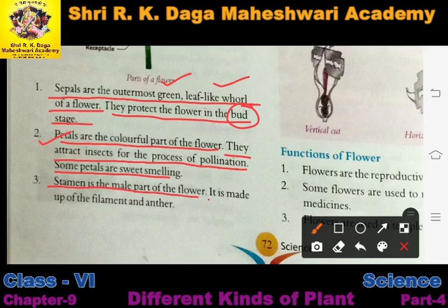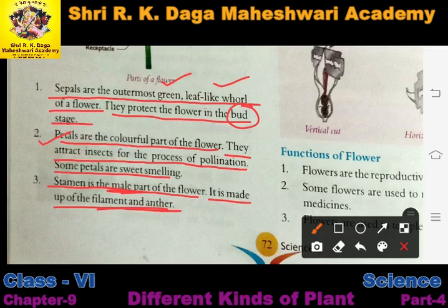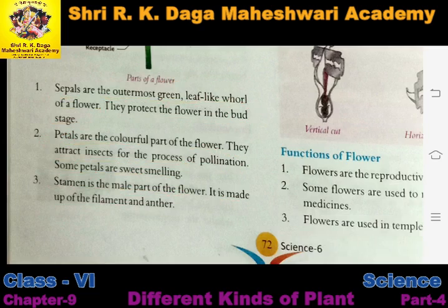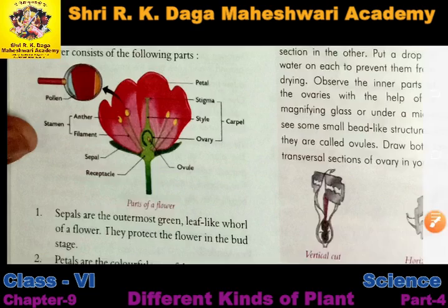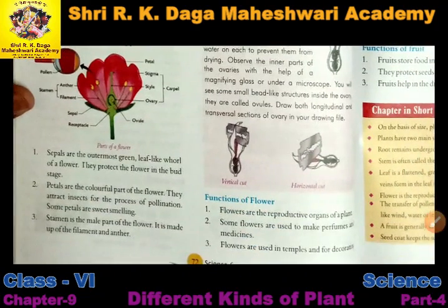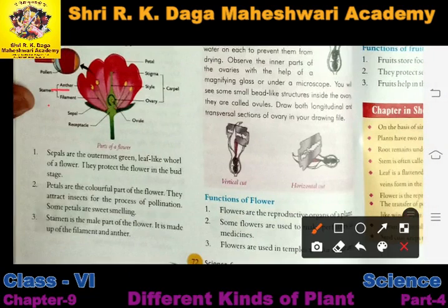The stamen is the male part of the flower. It is made up of filament and anther. The stamen is the male part of the flower. As we saw in the figure, anther and filament together are given a common name — that is the stamen. So anther and filament are the male parts of the flower.